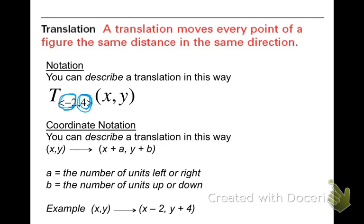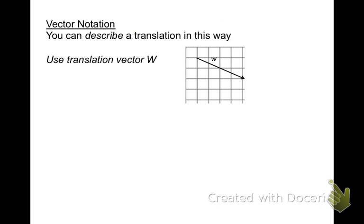And then one last way, which we haven't talked about, is vector notation. In vector notation, you are just given a ray on a coordinate plane. You have an initial point, which is the end point of your ray, and you have a terminating point, which is the arrow of your ray.